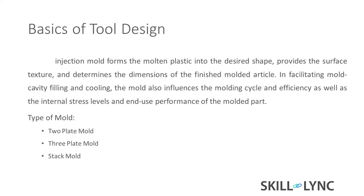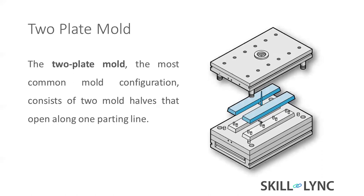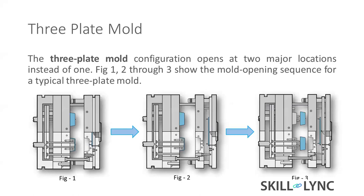We have to make the surfaces, textures, and features correctly so the material fills and cools properly inside the cavity. The molding cycle has the biggest influence on the final part because the tool creates internal stress in the part - we need to reduce that internal stress to create a quality part. We have three types of mold design: two-plate, three-plate, and stack molding. The two-plate mold has just two halves - it's for simple parts mostly, but it is also commonly used for complex parts.